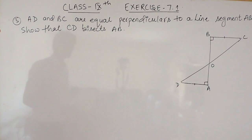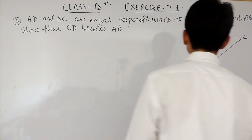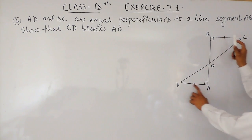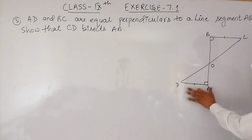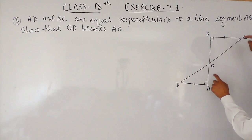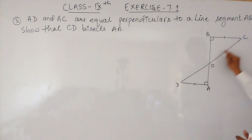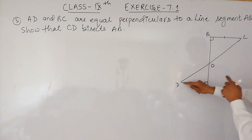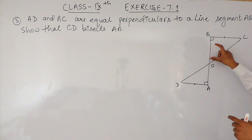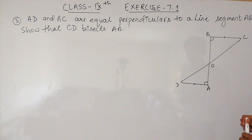We have to show that line CD bisects AB. It is given that BC and AD are two equal perpendiculars, meaning the length of these two sides is equal. Plus, these are perpendicular, meaning each line makes an angle of 90 degrees with AB. We have to prove that this line CD divides AB into two equal parts — that is, the length of AO is equal to the length of OB.